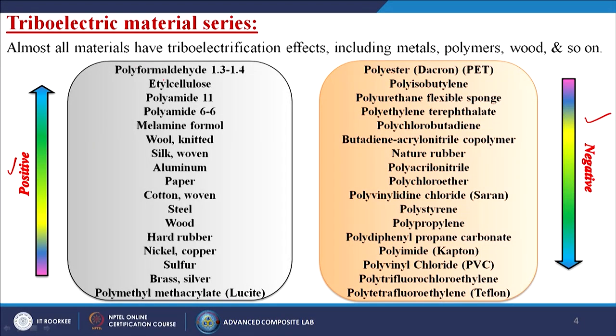If I talk about the positive side of the triboelectric series, the top is polyformaldehyde, and it comes down slowly to polymethyl methacrylate (also called lucite). For the negative side, the top is polyester (also called Dacron or PET), and the last one is polytetrafluoroethylene (PTFE or Teflon). In this way we can subdivide materials into two parts: one with positive charge tendency and one with negative charge tendency.